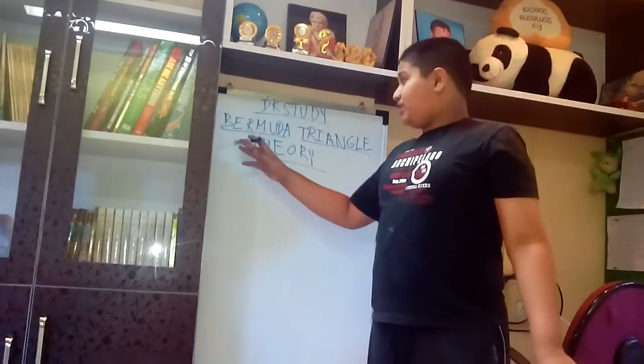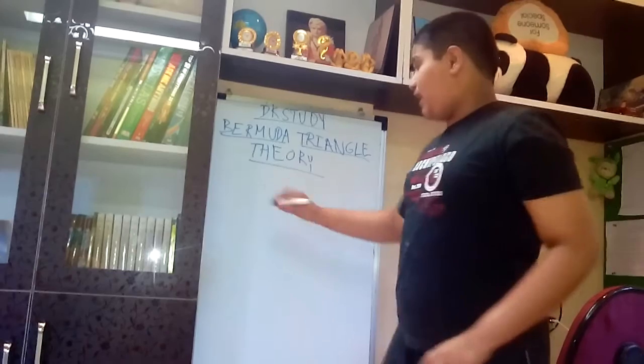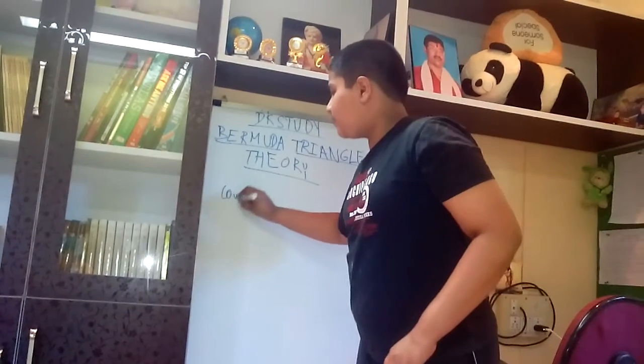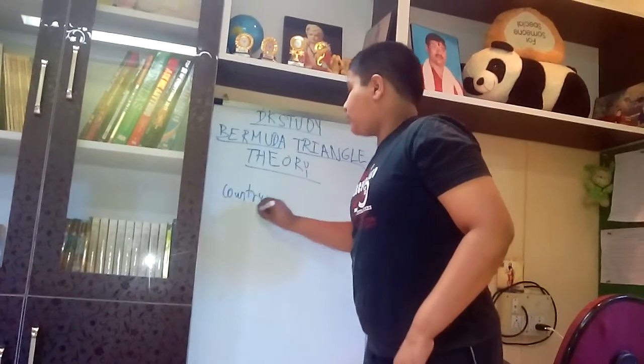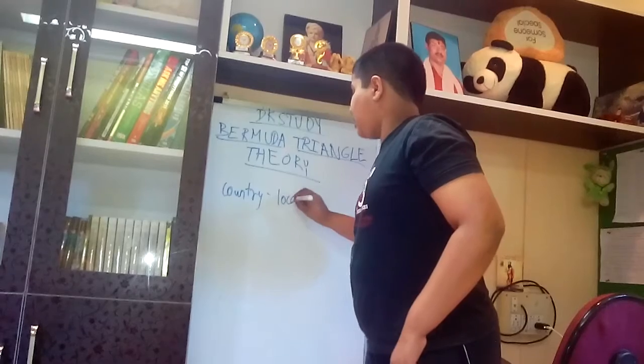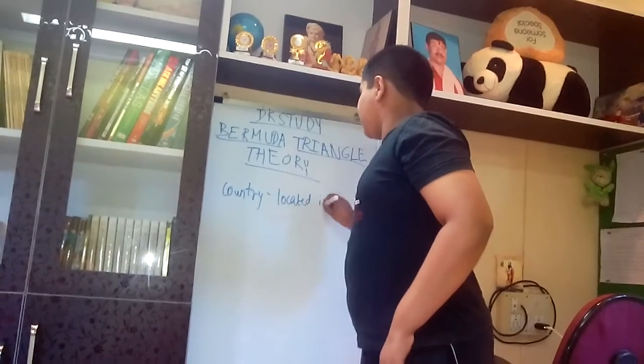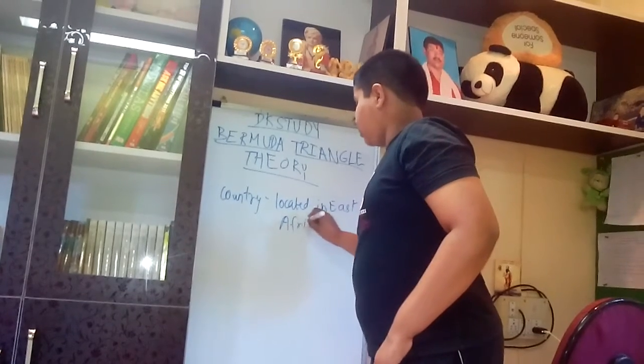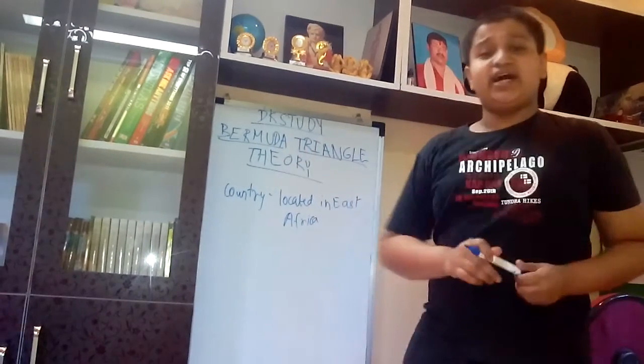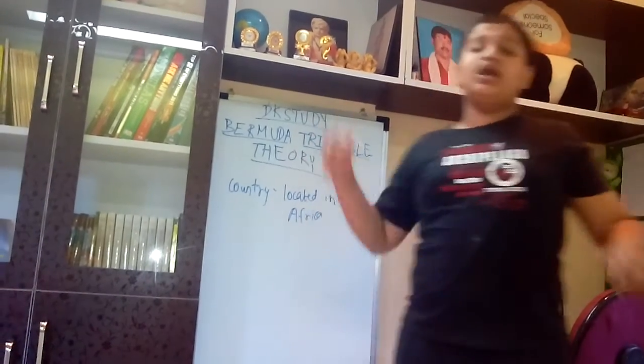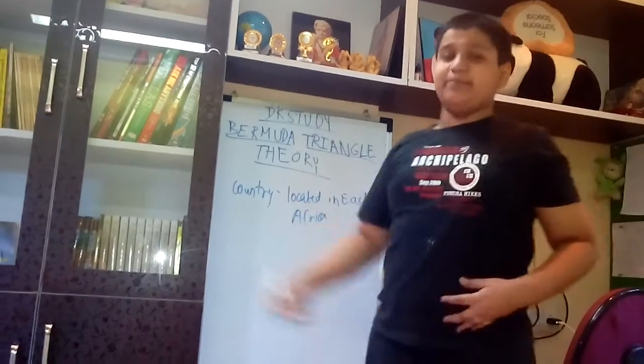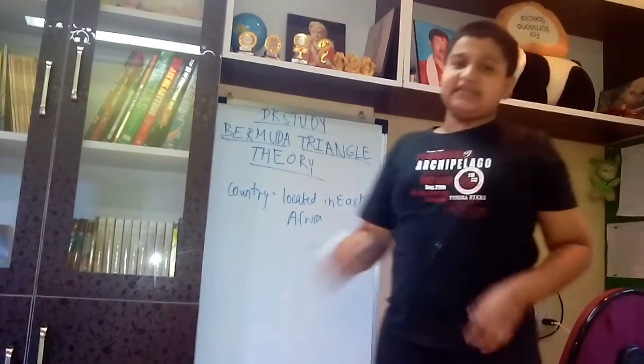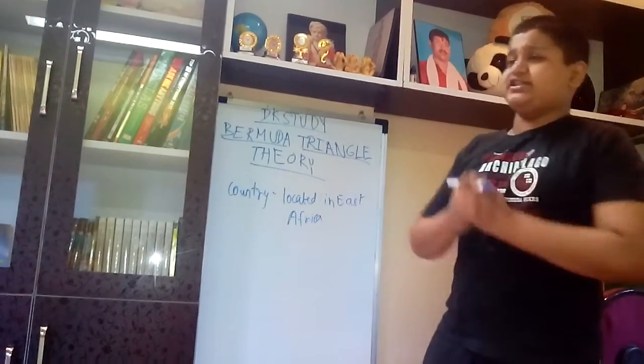But actually what is this Bermuda? Bermuda is a country which is located in East Africa. It is actually an off-coast country. It has a lot of timber in it. So the trade there is very good and it is a very flourishing country.